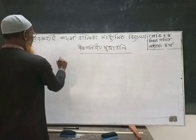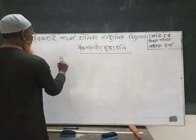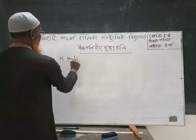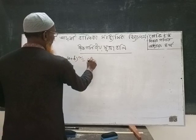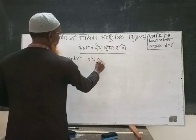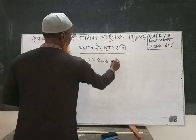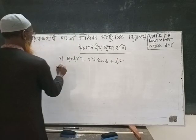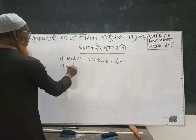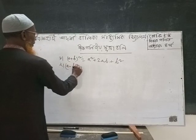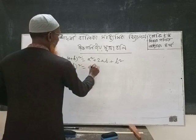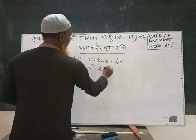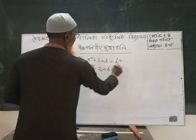First, a squared plus b squared: a squared plus 2ab plus b squared. Then a minus b squared: a squared minus 2ab plus b squared.